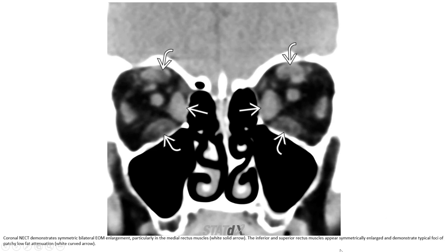Let's see the first example, showing diffusely enlarged symmetric bilateral extraocular muscle enlargement, particularly in the medial rectus muscle. The inferior and superior rectus muscles also appear enlarged, with mild signal changes and perilonal fat changes.